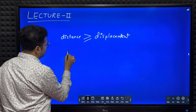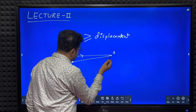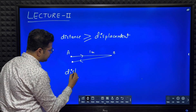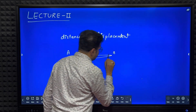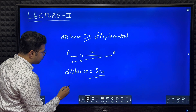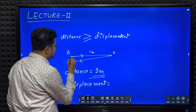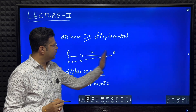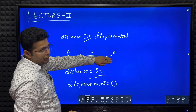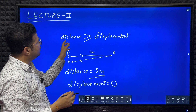For example, a particle goes from point A to point B and comes back to point A. If the distance between A and B is 1 meter, then distance equals 1 meter plus 1 meter, which is 2 meters — that is the length of the actual path. Displacement is the minimum distance between initial and final points. Since the particle returns to A, displacement is equal to 0. If the body only goes from A to B, then distance equals displacement. Otherwise, distance is always greater than displacement.